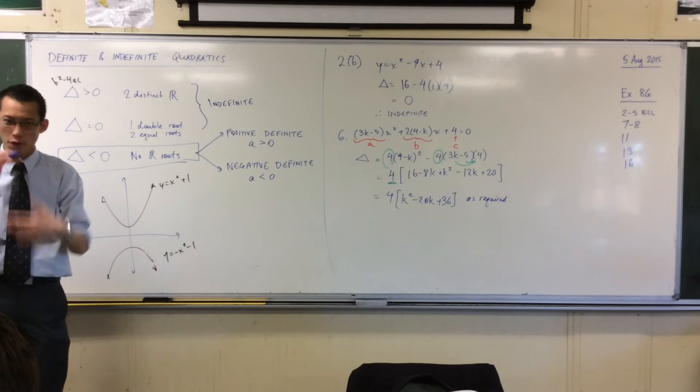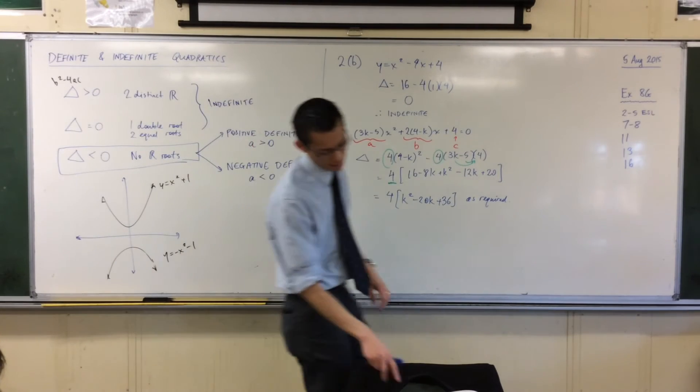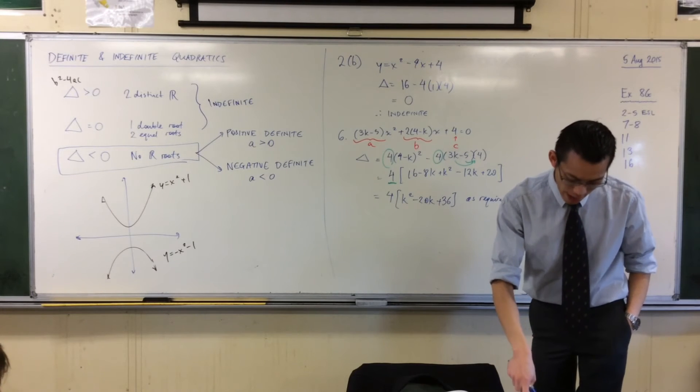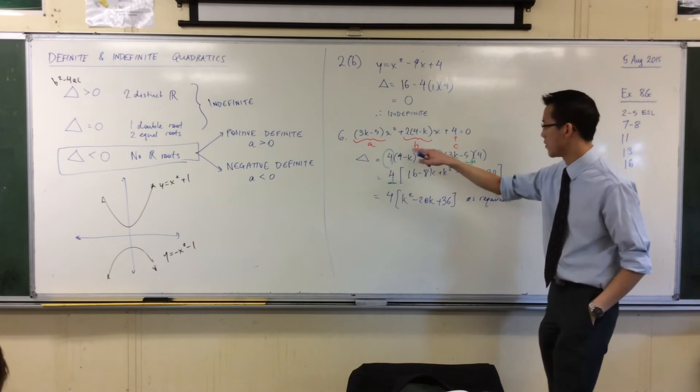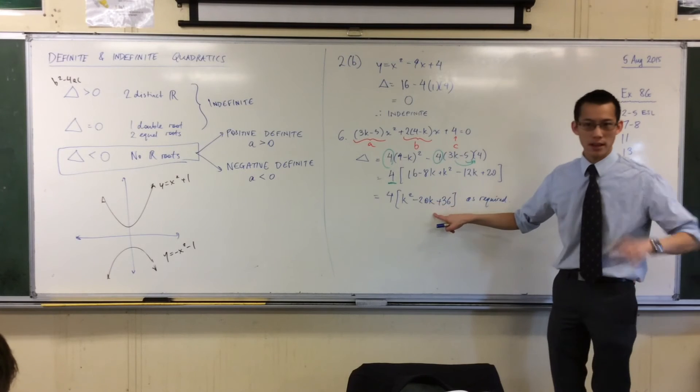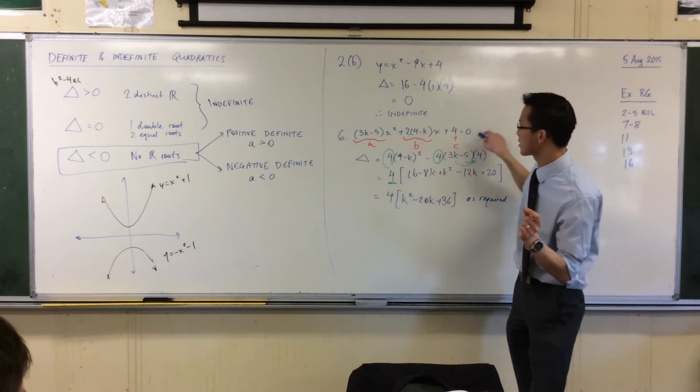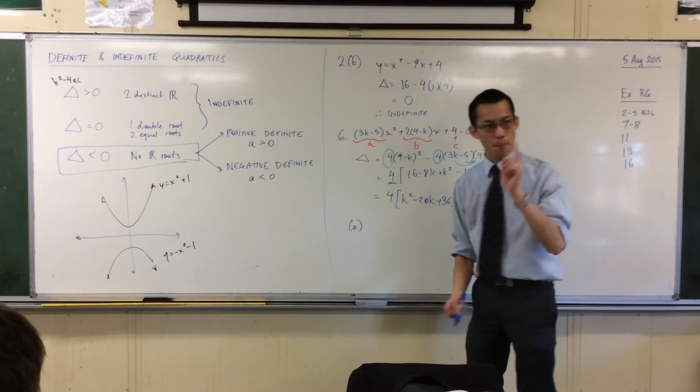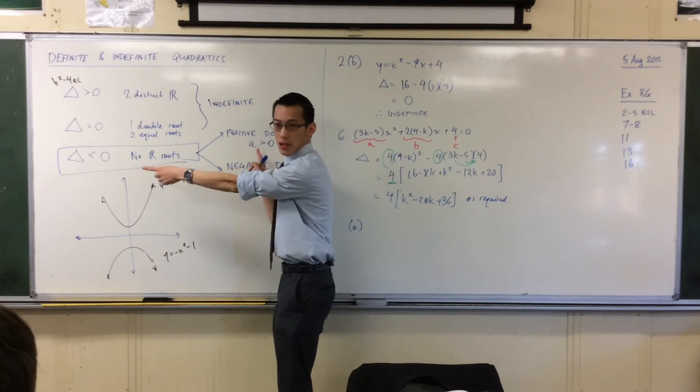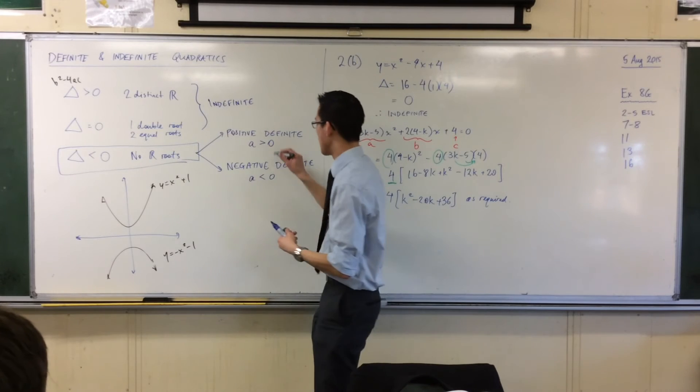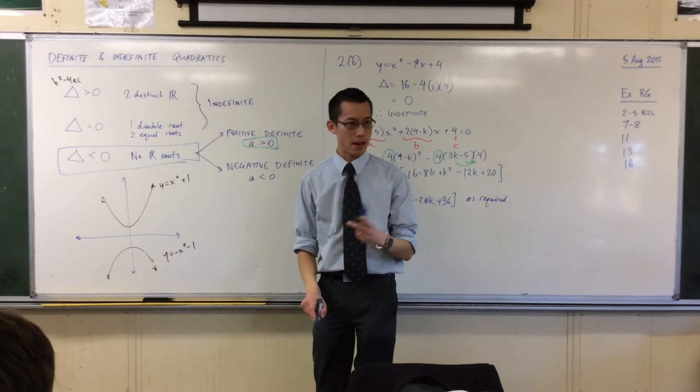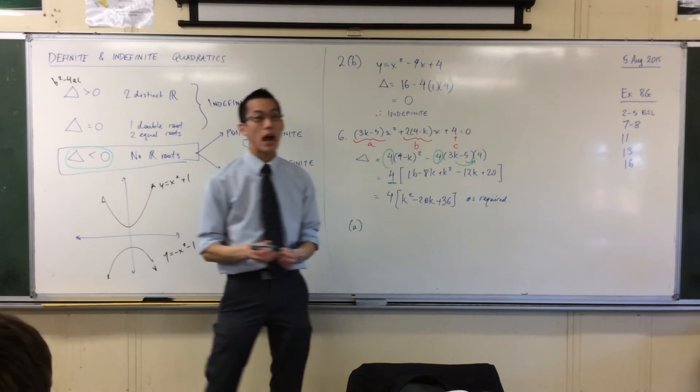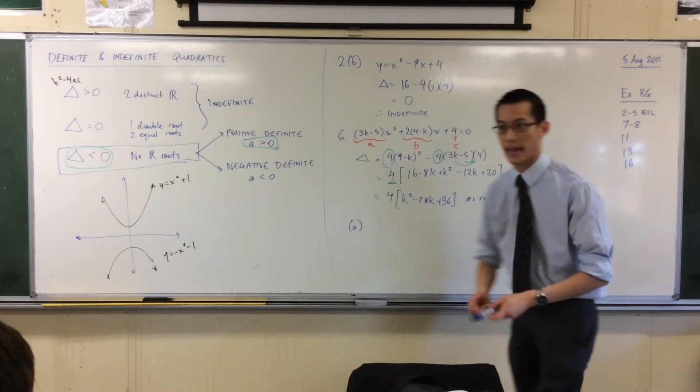Let's have a look at the different parts and what they want us to show. For starters, it says, find the values of k, find the values of k, there they are, such that you've got this guy being positive definite. Okay, so let's think about this, right? For positive definite, I need to meet two conditions, right? Here we go. I need to have this guy. It's got to be positive. And I've got to have this guy. Okay, so I have two inequalities that I must satisfy.